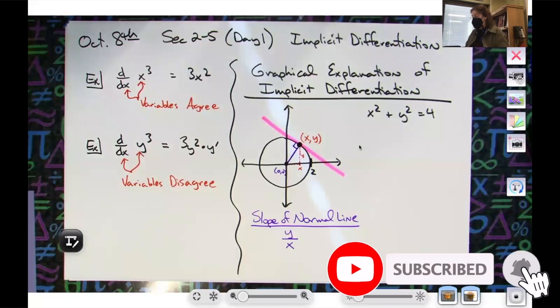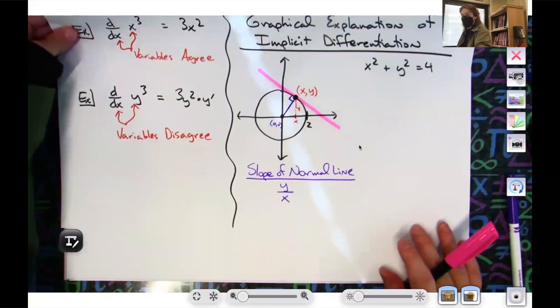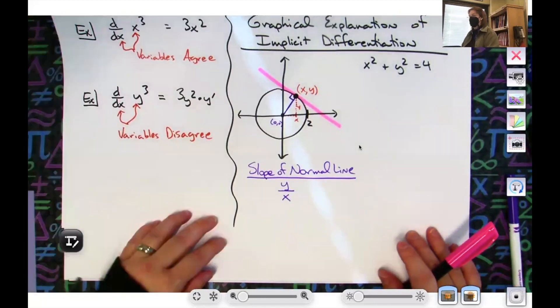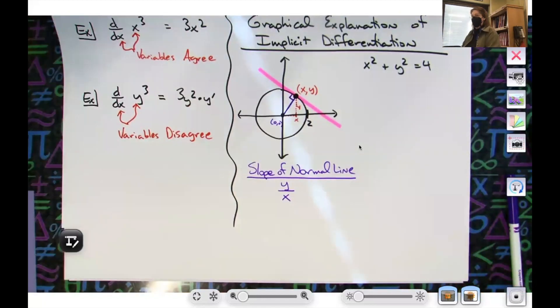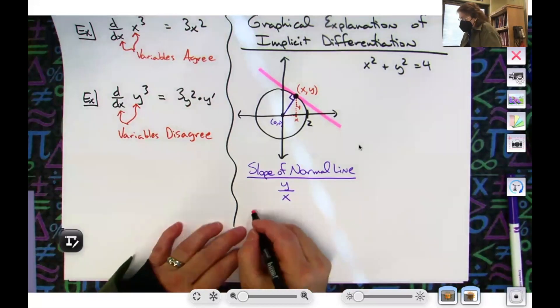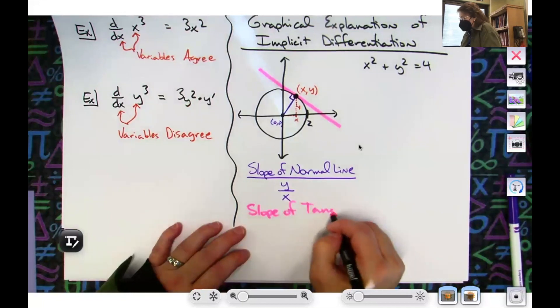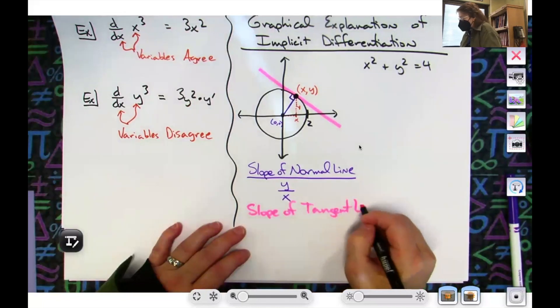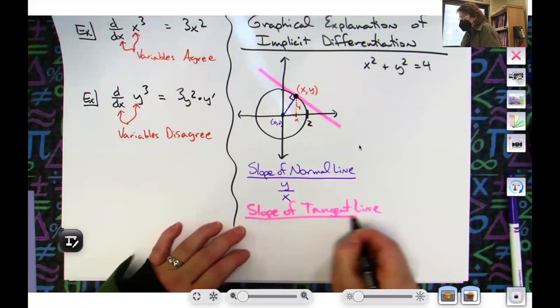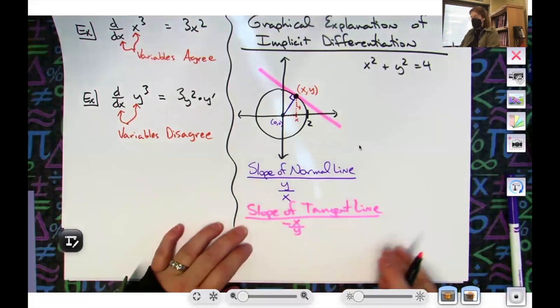Now, if I know the slope of the normal line, can I come up with the slope of the tangent line? Because they're perpendicular lines right. And the slopes of perpendicular lines are negative reciprocals. So I can do the slope of the tangent line. So it would be what? Negative x over y. Okay.